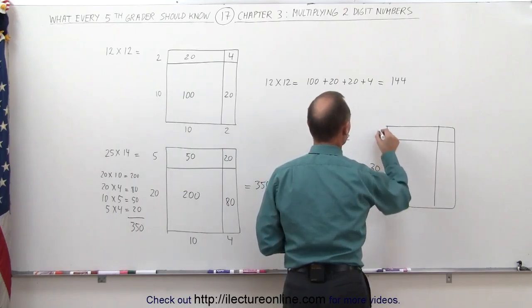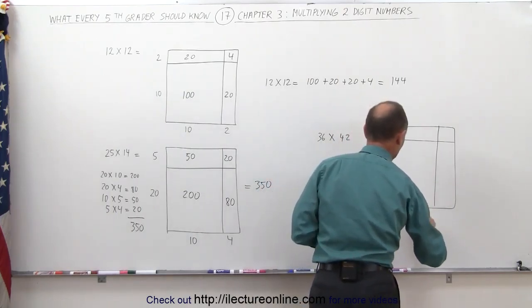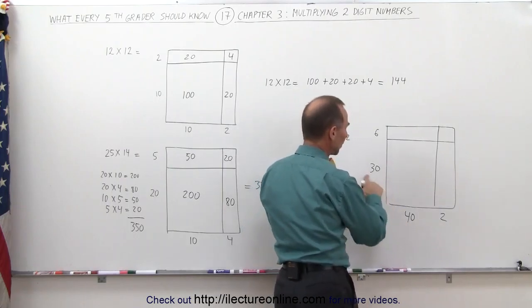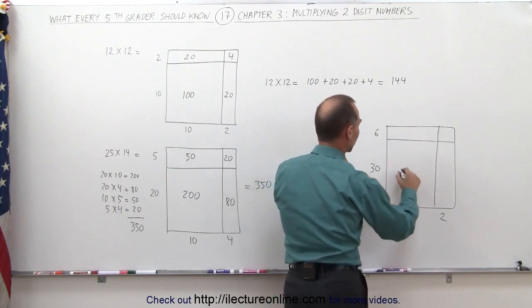36 is 30 and 6, 42 is 40 and 2, 30 times 40, 3 times 4 is 12, add a 0, so you get 1200.